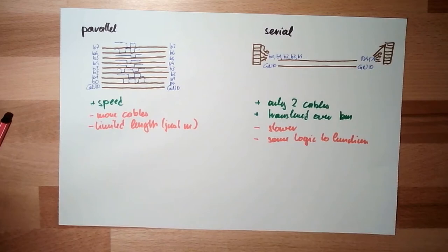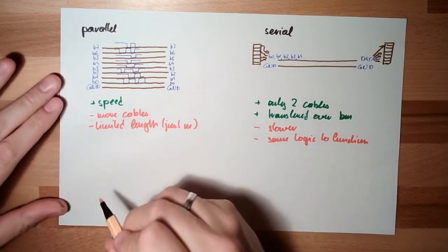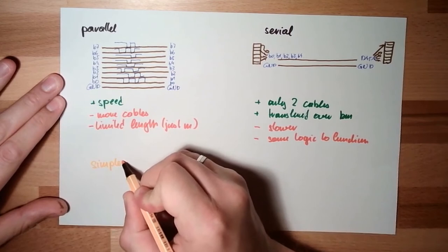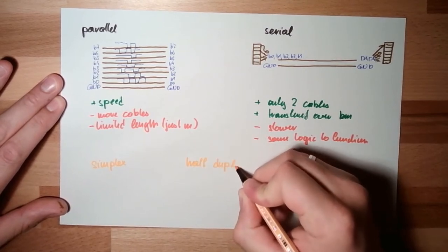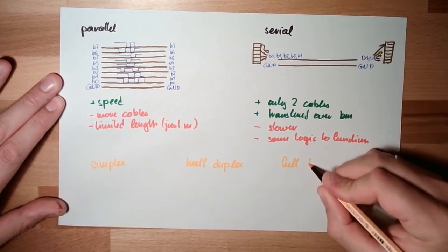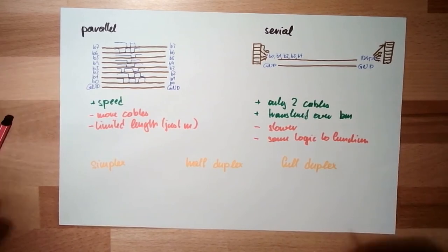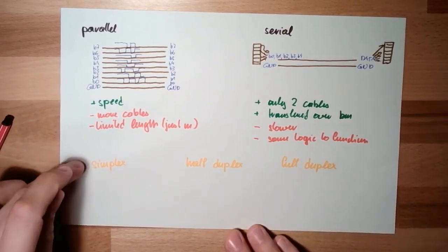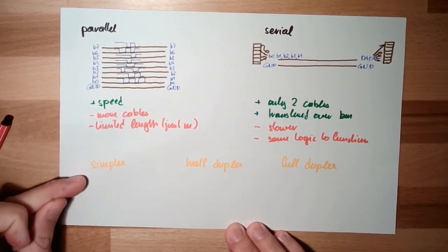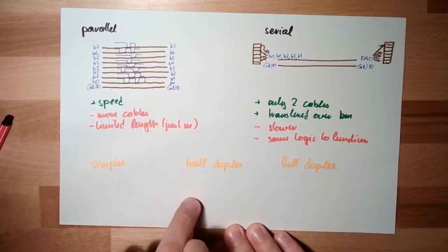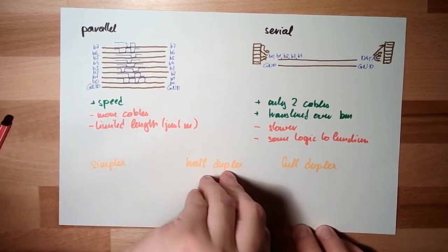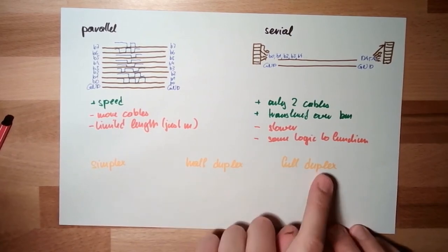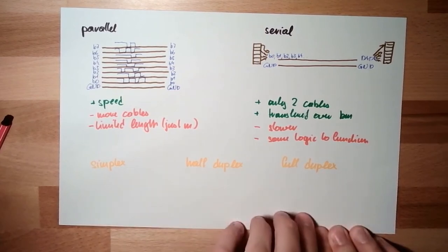Then we have the terms of simplex, half duplex, and full duplex. What does it mean? Simplex, there's a dedicated sender and a dedicated receiver. The communication is just in one direction. Half duplex means every communication partner can talk or listen, but not at the same time. Full duplex means every communication partner can talk and listen even at the same time.